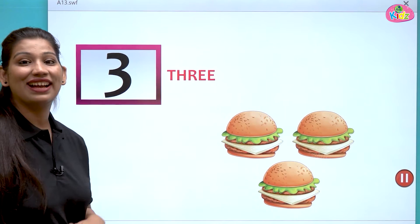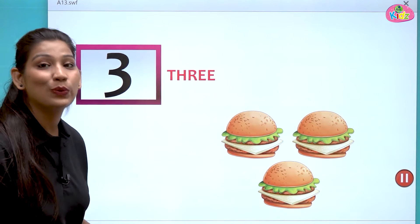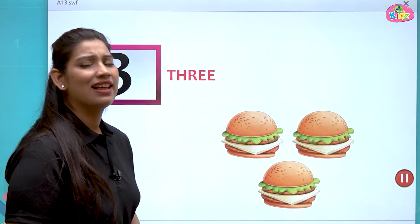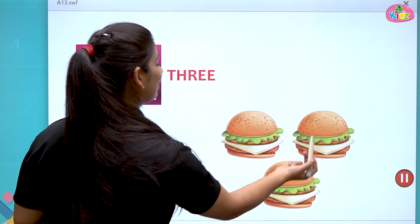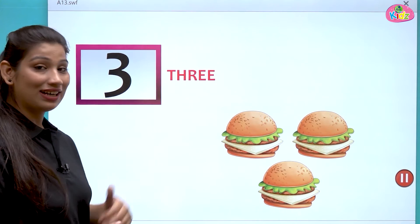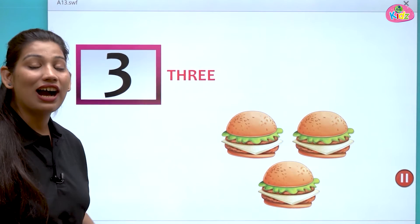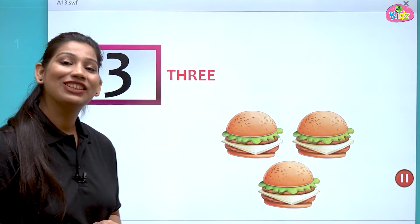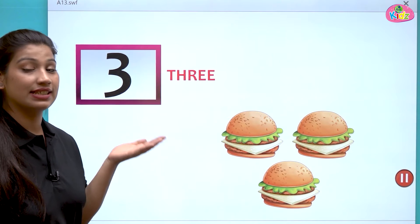Now comes number three. This is how we make three. Here you can see burgers — let us count how many: one, two, three. There are three burgers. The spelling is T-H-R-double-E, three. Three burgers!